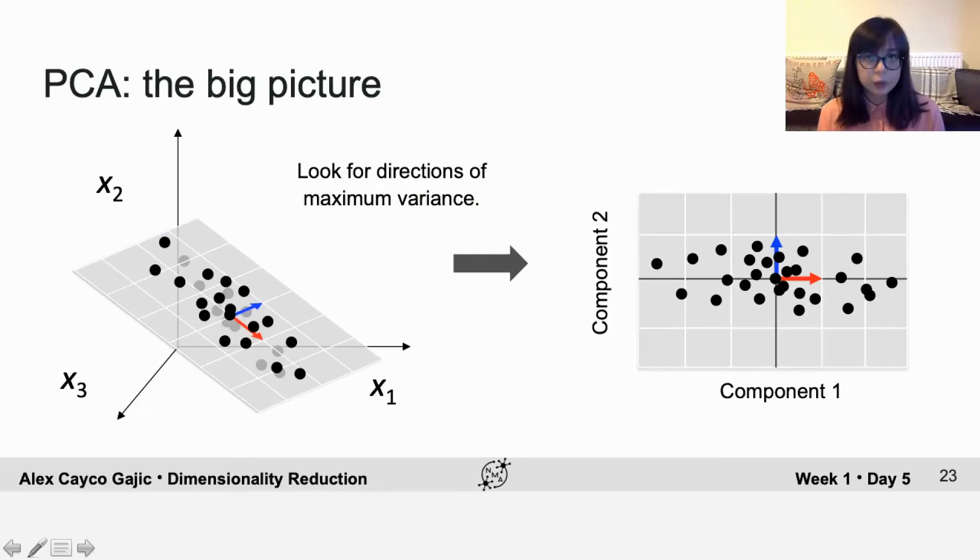Welcome back. Remember that the goal for dimensionality reduction is to find a lower dimensional subspace that you can use to capture much of the structure of your original data. So to understand how this can work, we need to understand how you can represent data in multiple different coordinate systems.